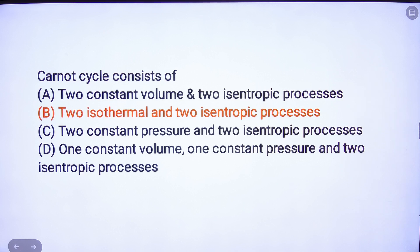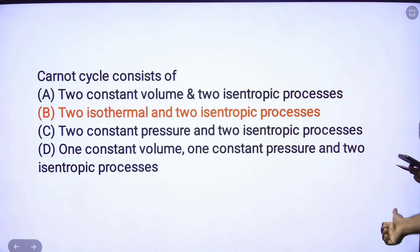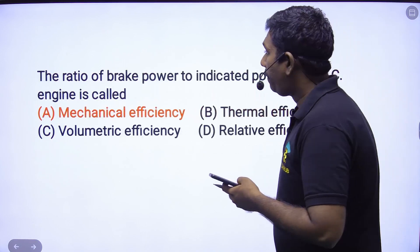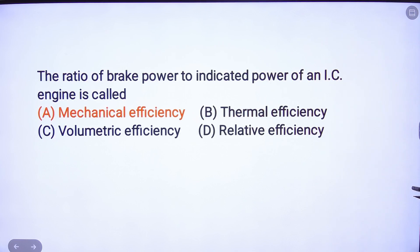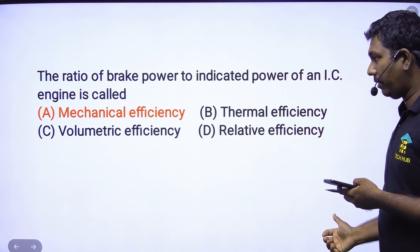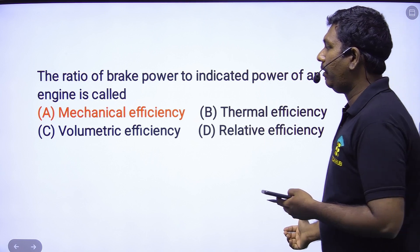Carnot cycle consists of — Carnot cycle definition. The ratio of brake power to indicated power in an IC engine is mechanical efficiency — correct answer.